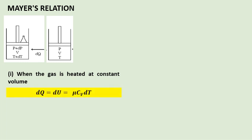Let us look into the equation dQ. The supplied heat energy equals dU, that is used for increasing its internal energy, that is equal to mu times Cv dT.